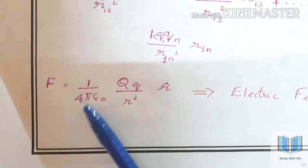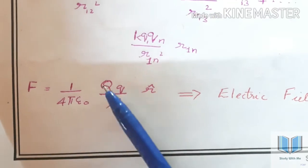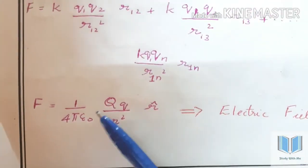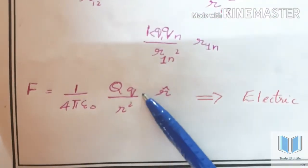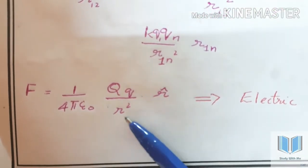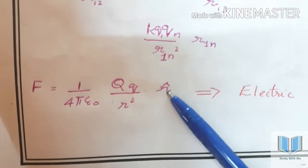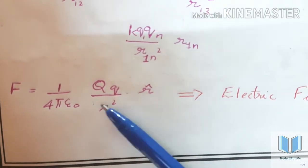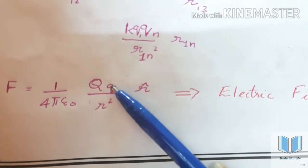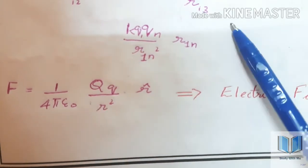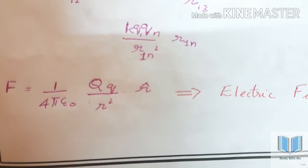This gives the electric field. The formula is: E is equal to 1 by 4πε₀ into capital Q by r squared. There are two types of charges — one is positive and one is negative. Two positive charges repel, two negative charges also repel.